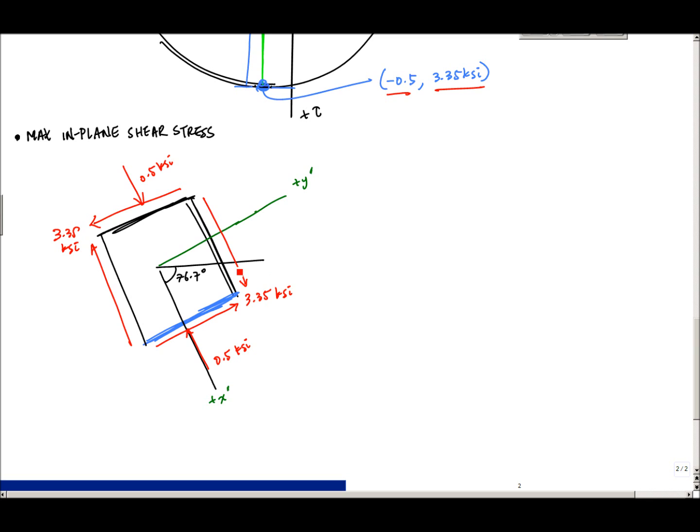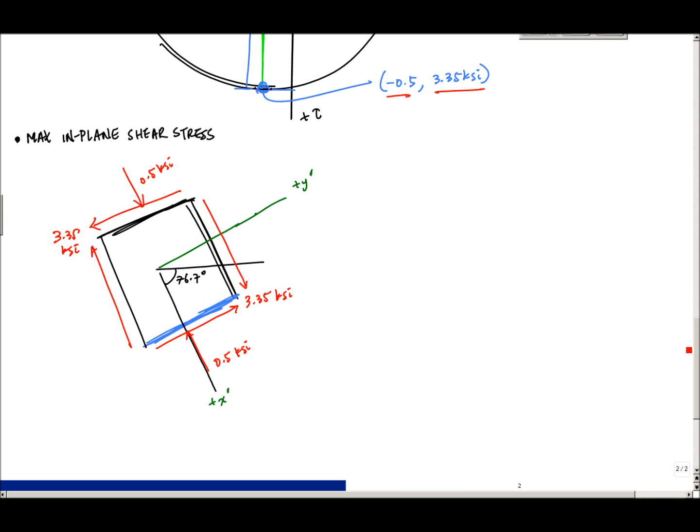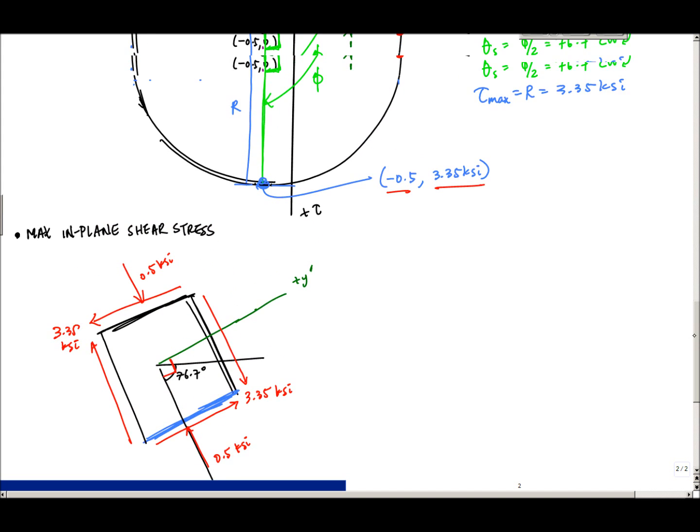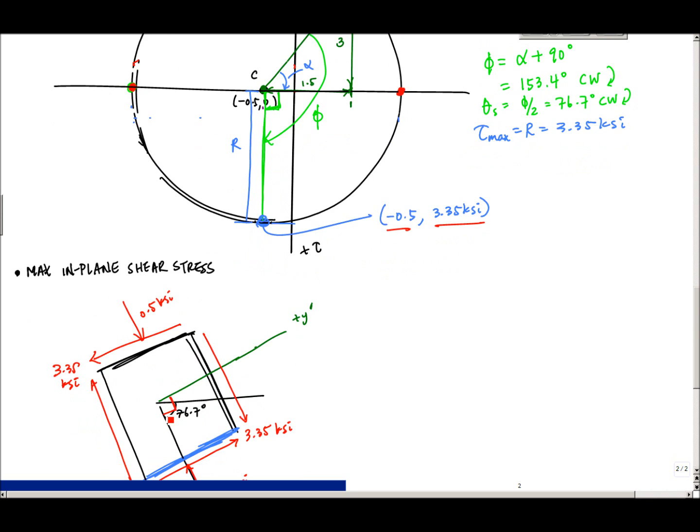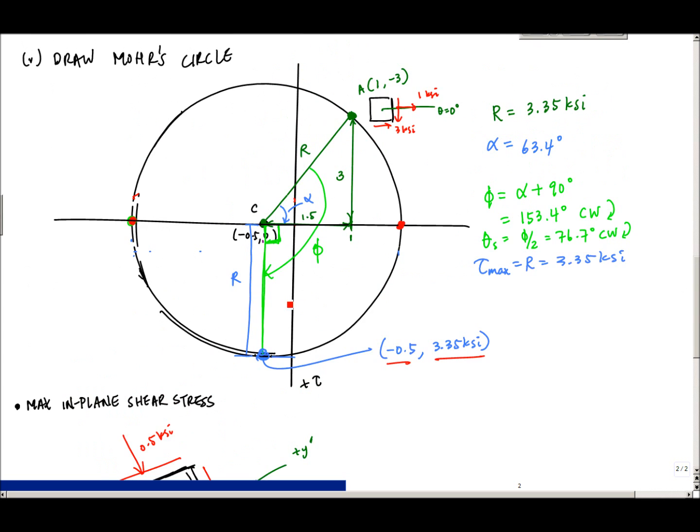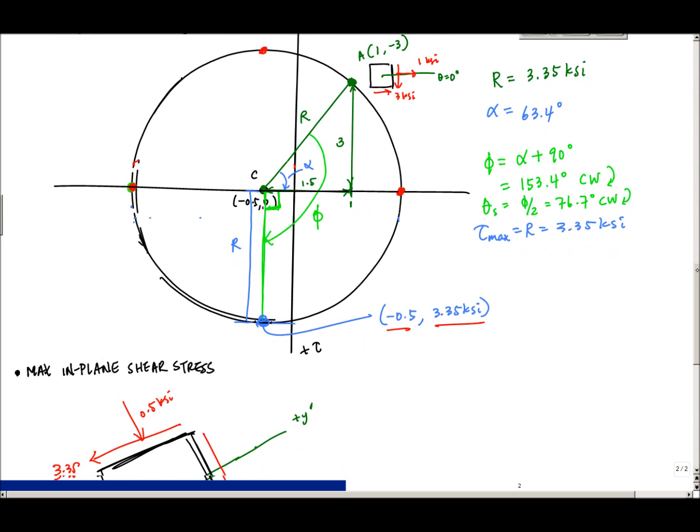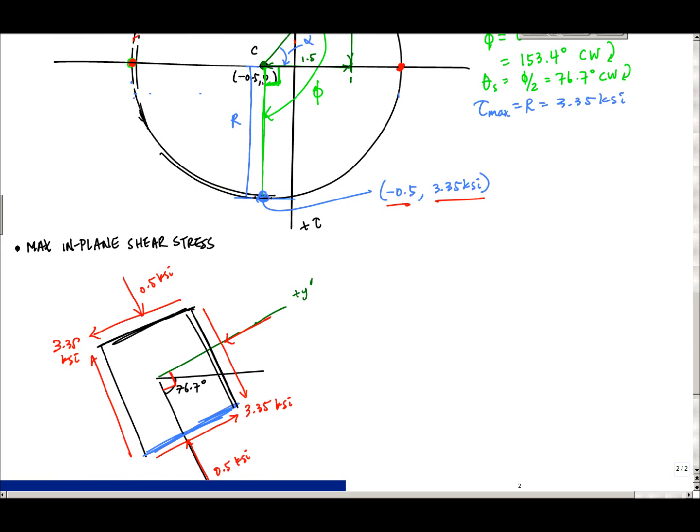And then I have to think about what's my normal stresses here. You know, just like we were talking about before, to go from x prime to y prime here, it's a 90 degree rotation in Mohr's circle counterclockwise. So that means it would be a 90 degree rotation in the representative volume element, be 180 in real life. That means I'm all the way over here, and hey, my normal stress here is also 0.5 ksi negative. So here, 0.5 ksi, 0.5 ksi.